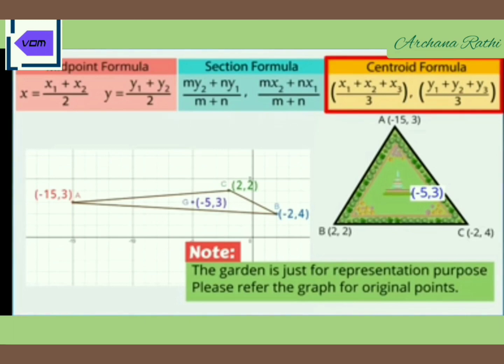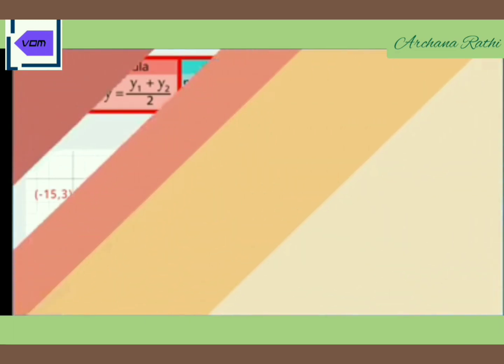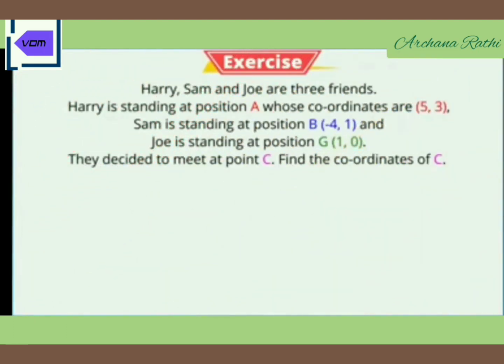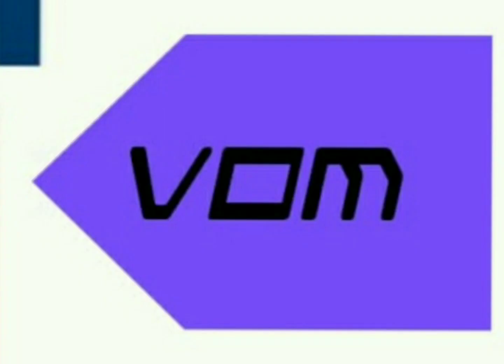Do practice of this. Here is one problem for you: Harry, Sam, and Joe are three friends. Harry is standing at position A whose coordinates are (5, 3). Sam is standing at position B (-4, 1) and Joe is standing at position G (1, 0). They decided to meet at point C. Find the coordinate of C. Hope you understand, and thank you for watching.